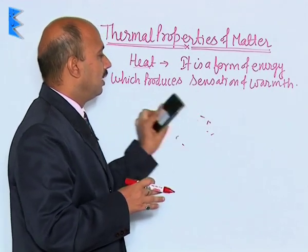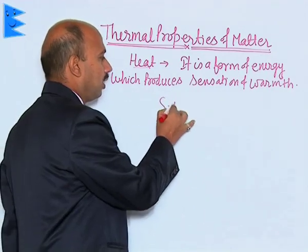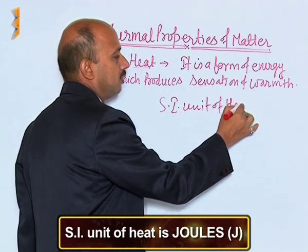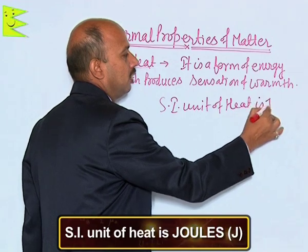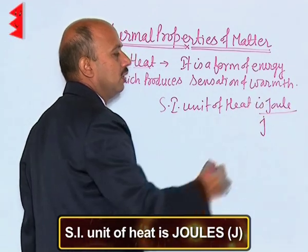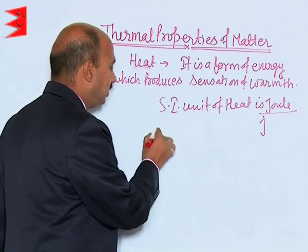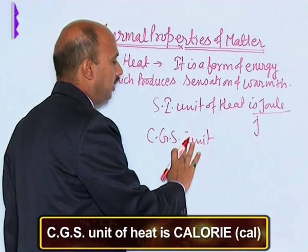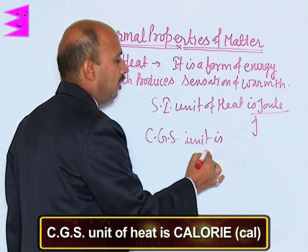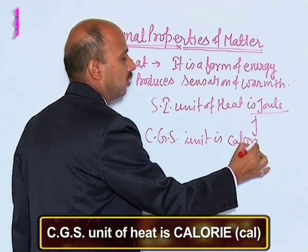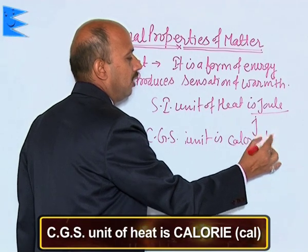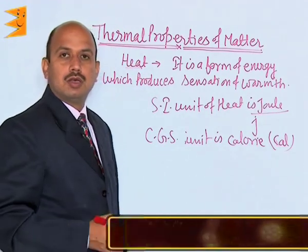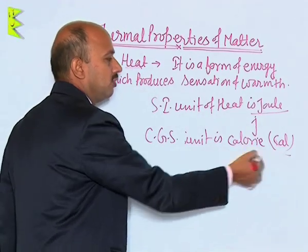The SI unit of heat energy is joule, represented by J. The CGS unit is calorie, written as cal.